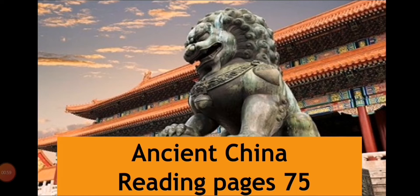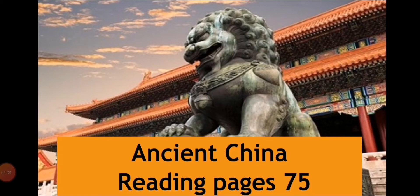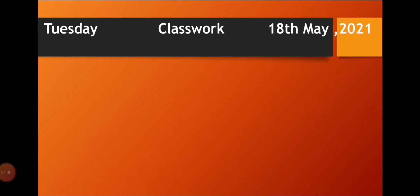Today we are going to do the reading of textbook page 75. All of you should take out your textbook, open page 75, and write down the date and day. Today is 18th May 2021. Write the date on the right corner, write 'classwork' in the center, and on the right side write the day, which is Tuesday.